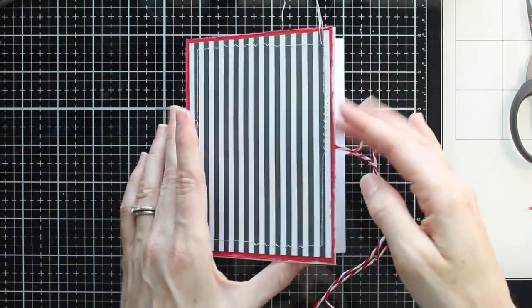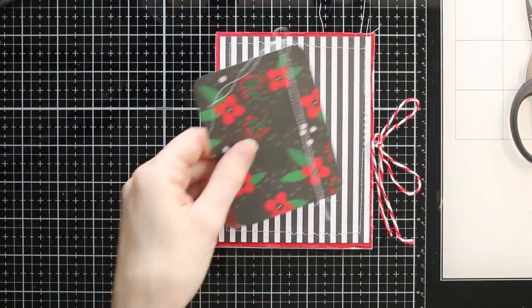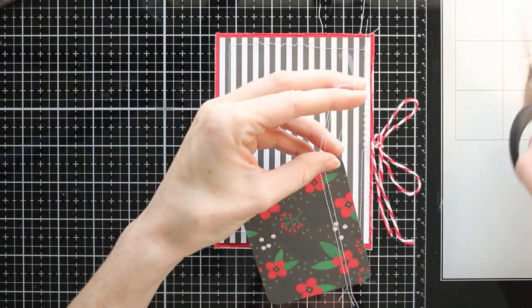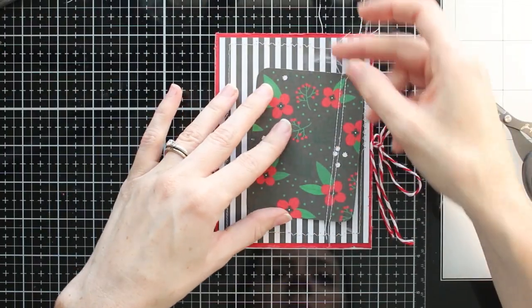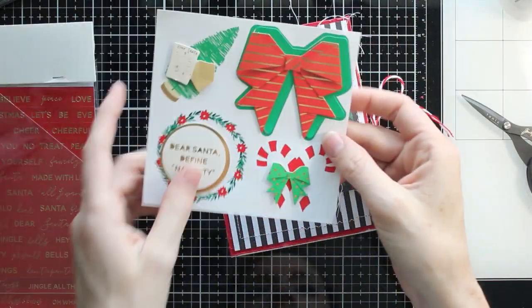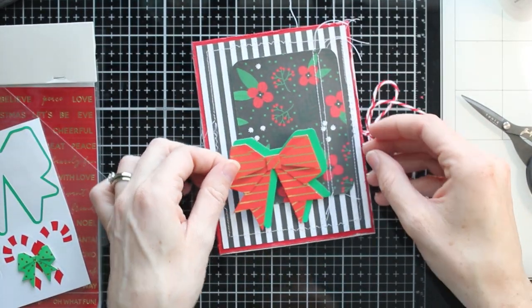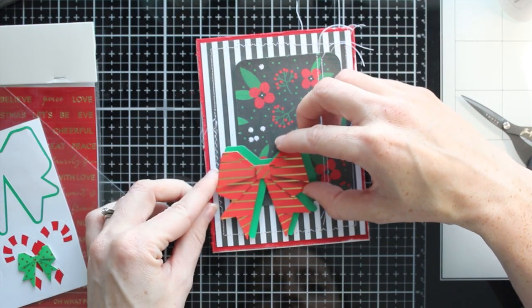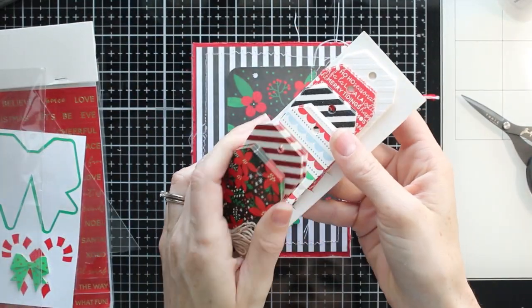So I've gone ahead and I've adhered that down. I've also added a little bit of sewing here to this journaling card and I like keeping those thread pieces kind of hanging off. I think it just looks really cute, kind of shabby and just goes with the whole theme. So I'm going to go ahead and start loading up the front of this album with all the stickers and all the things. I love this big foiled bow. It's a self-adhesive sticker. Just going to stick that on there.